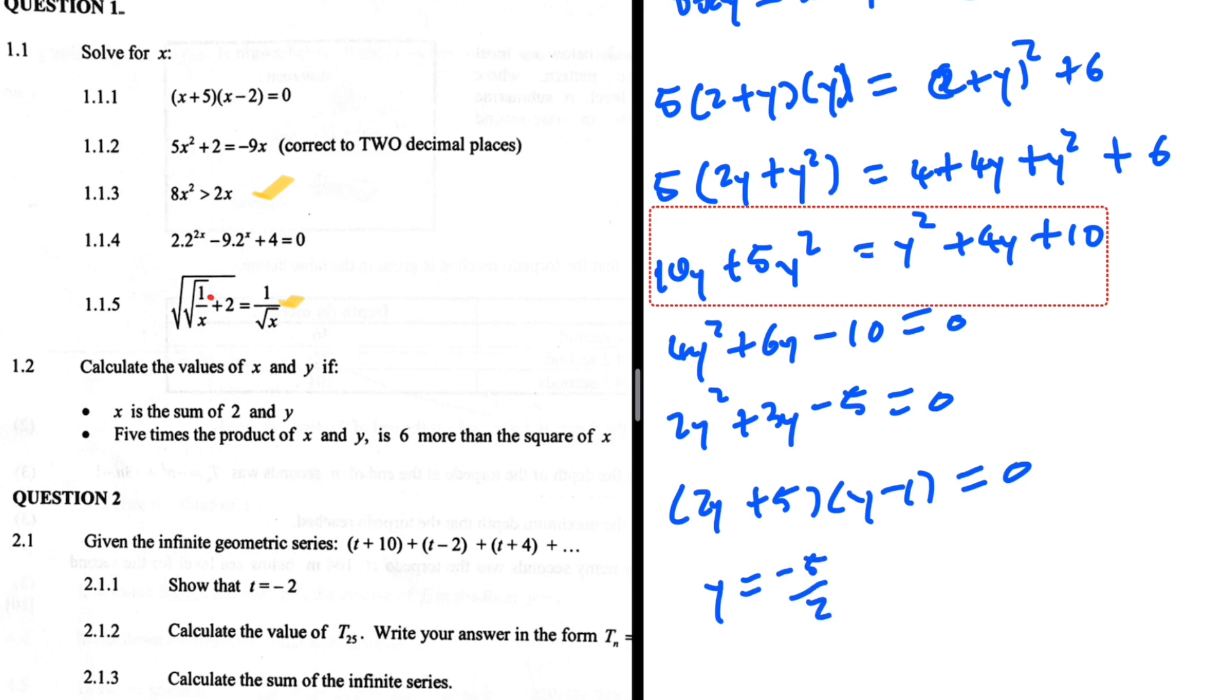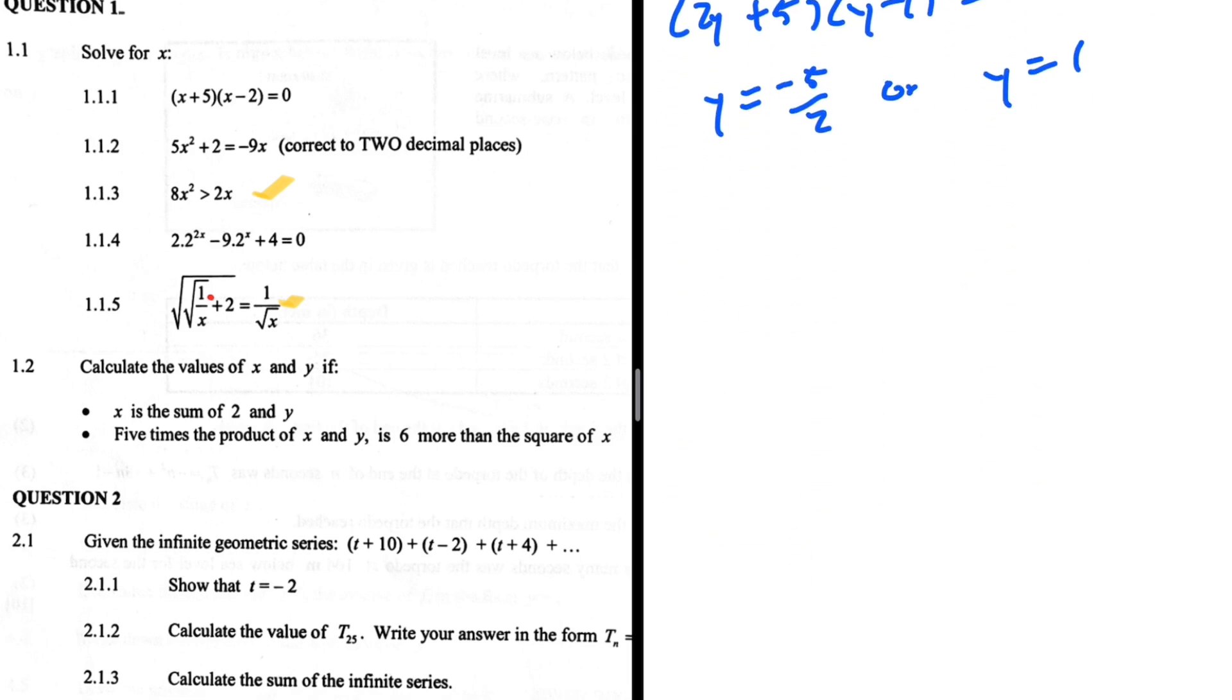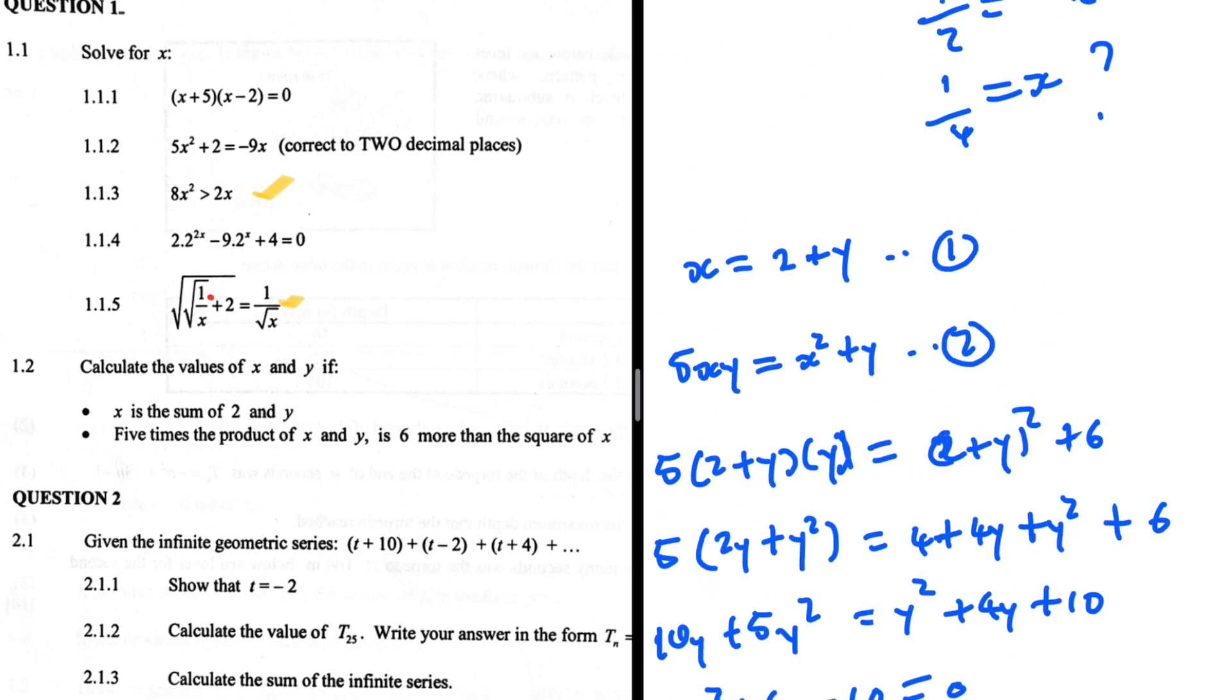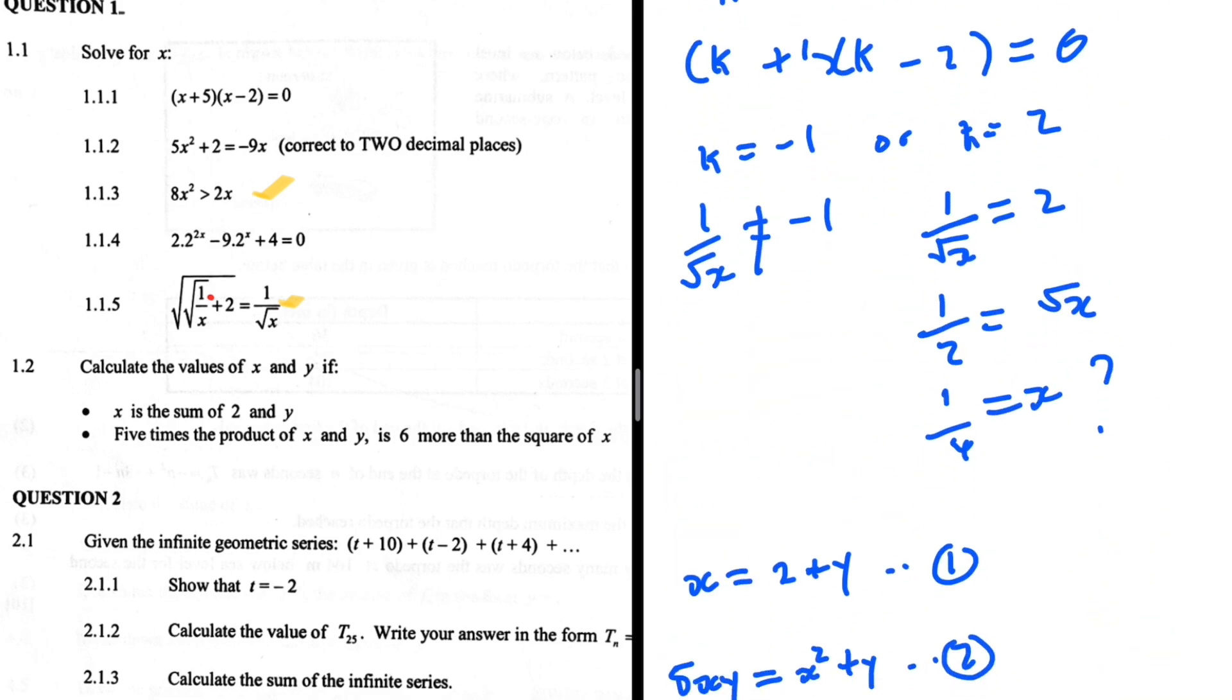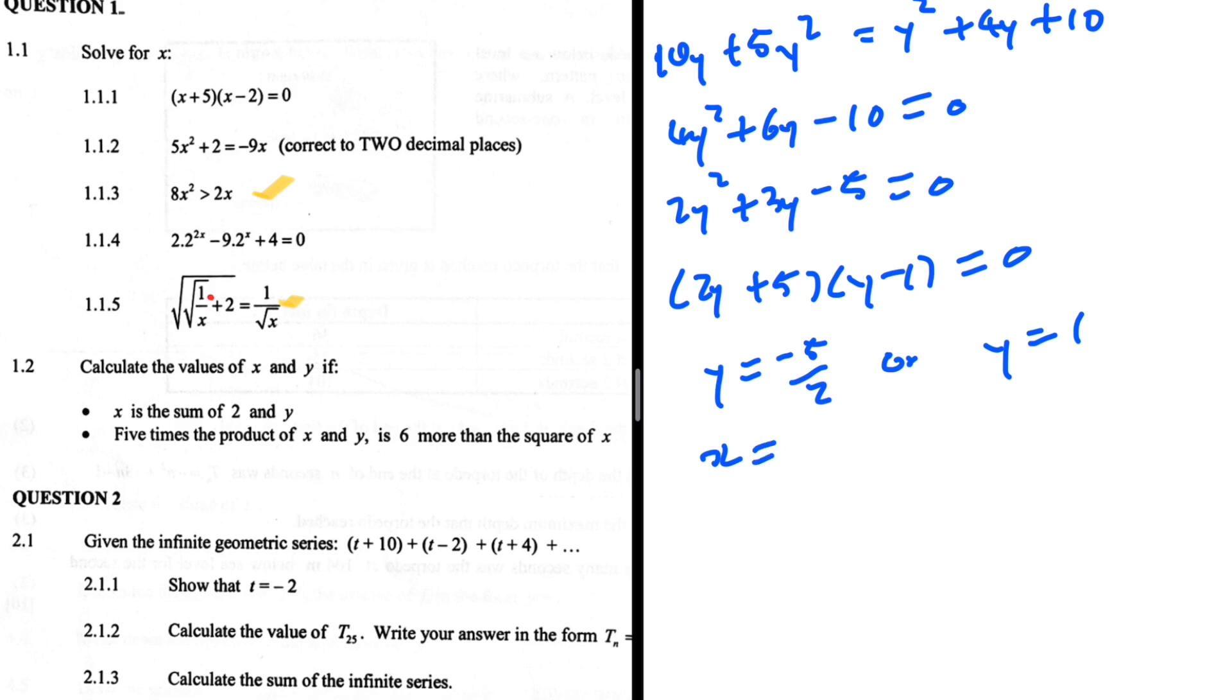So y equals minus 5 over 2, or y equals 1. If y equals 1, then x equals 2 plus 1, so x equals 3. On the other hand, x equals 2 plus minus 5 over 2, which equals minus 1 over 2.